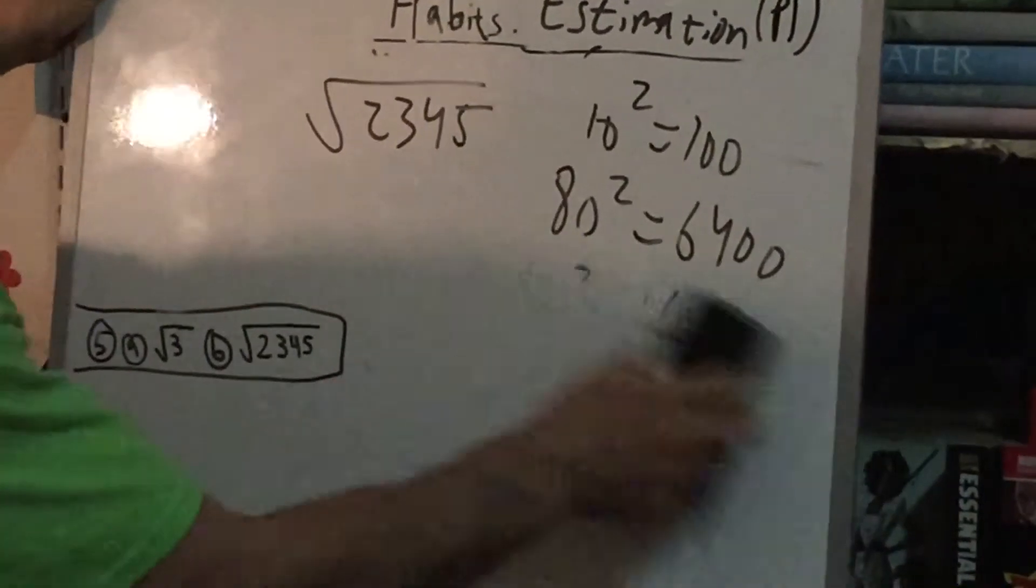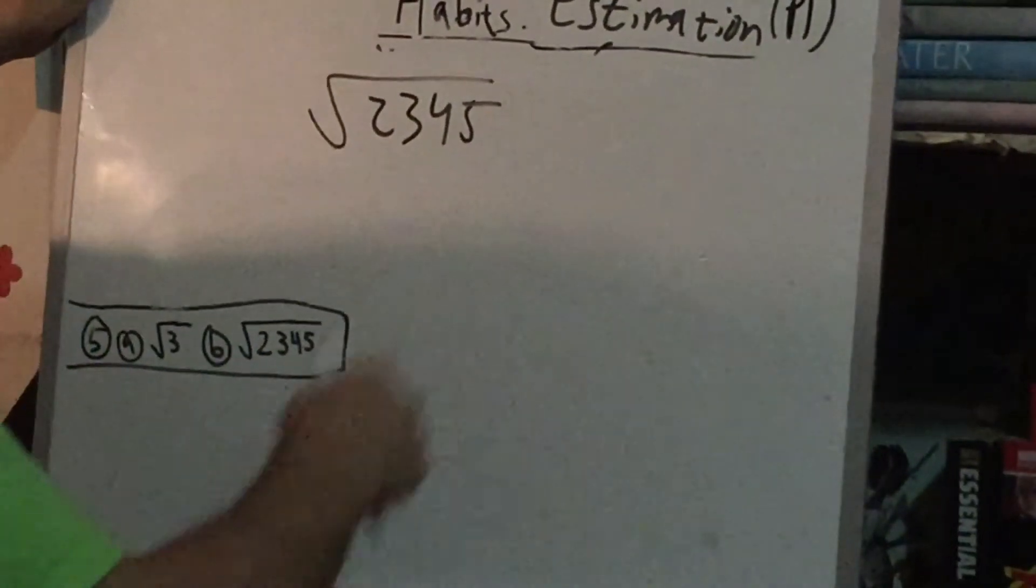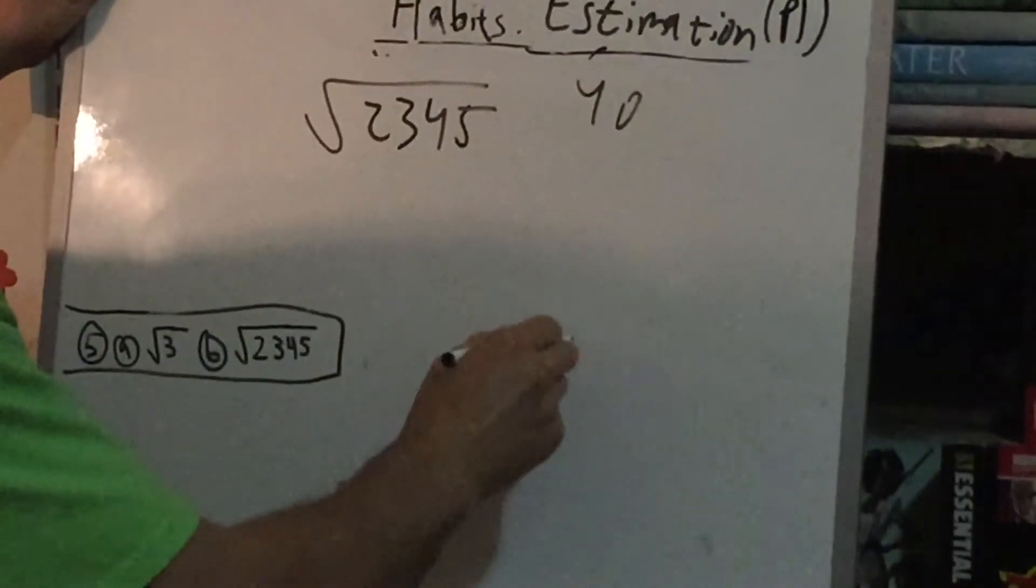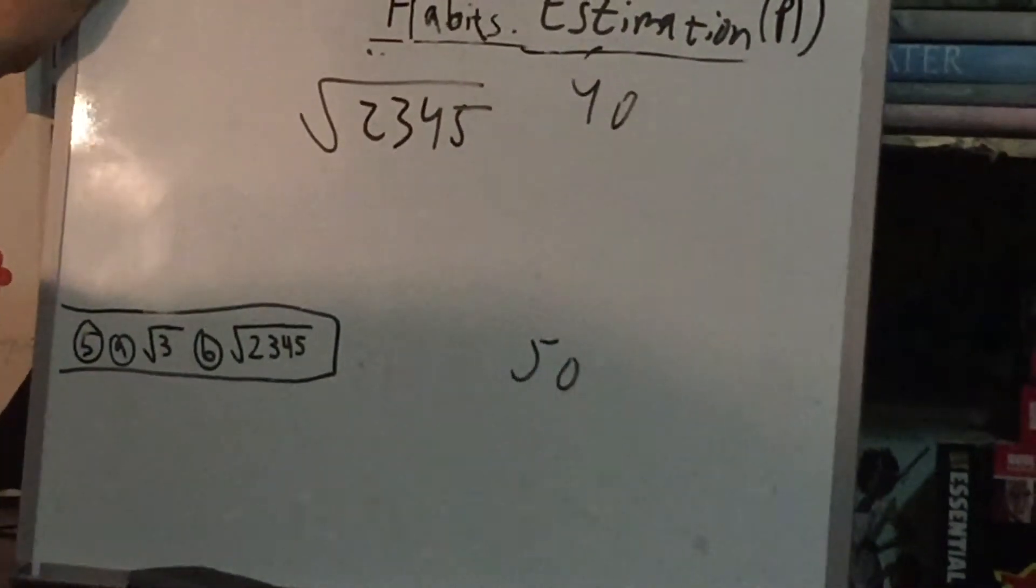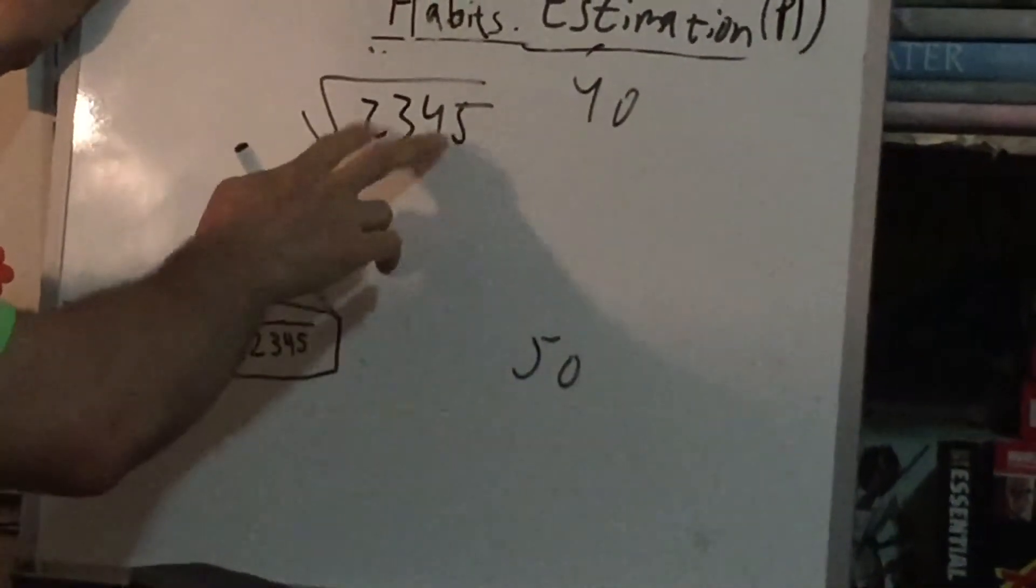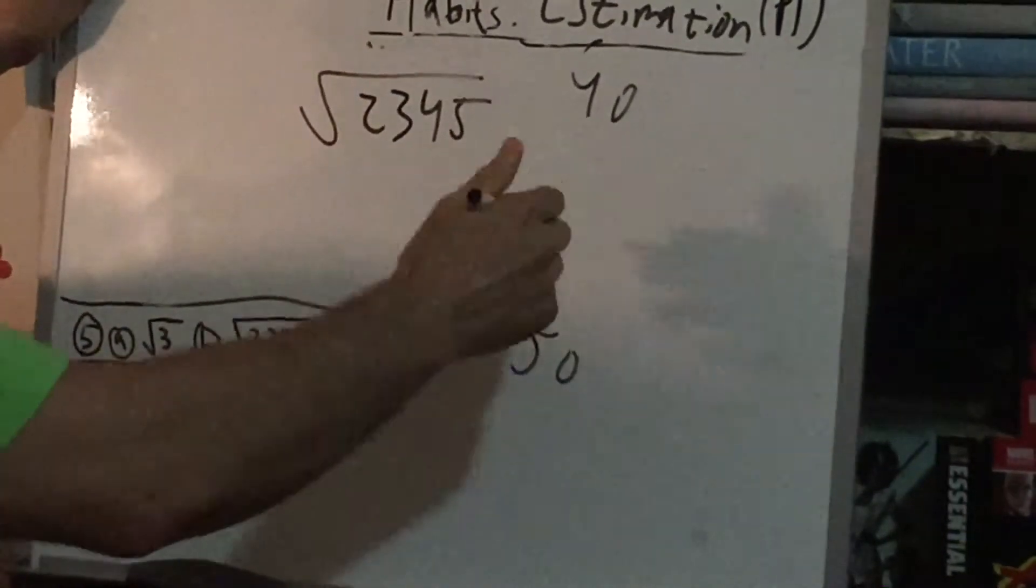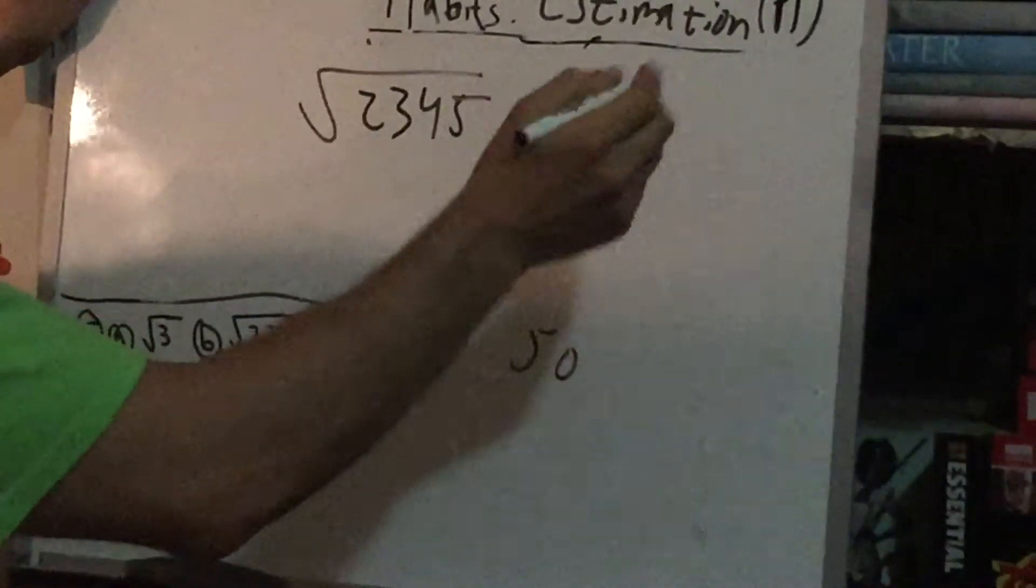So now, we're going to zoom in between 40 and 50. So what should we try next? Well, this looks like it's a little closer to 50 squared, but let's just go to the middle.